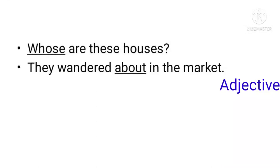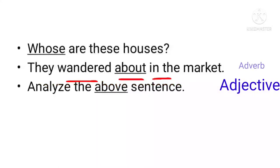If 'about' is used after a verb and there is no object of the preposition following it, then it is an adverb. But if a noun comes after it, it is a preposition. For example: 'Analyze the above sentence' — here 'above' is an adjective because there is a noun in front of it.